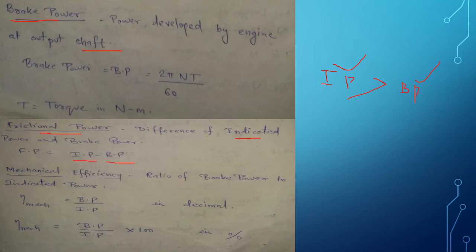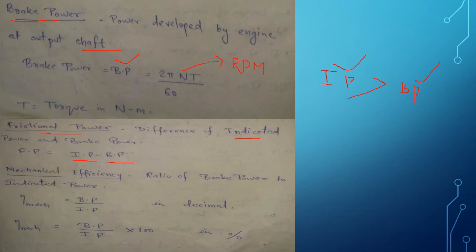The difference between indicated power and brake power is known as frictional power: frictional power = IP − BP. Brake power can be calculated by the formula: 2πNT / 60, where N is speed in RPM and T is torque in Newton-meter. The unit of brake power is in watts if torque is in Newton-meter, or kilowatts if torque is in kilonewton-meter.